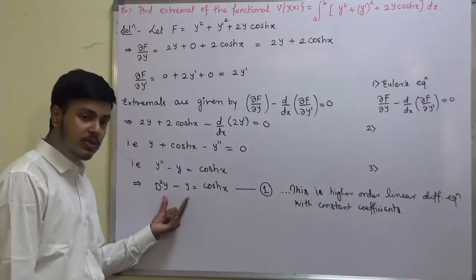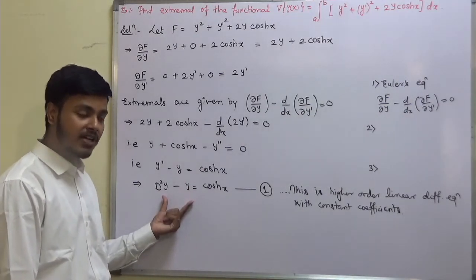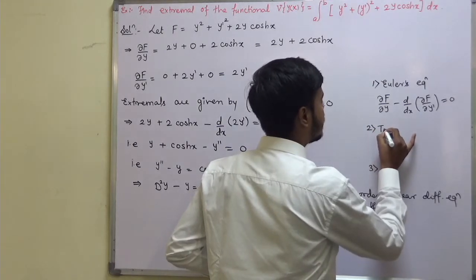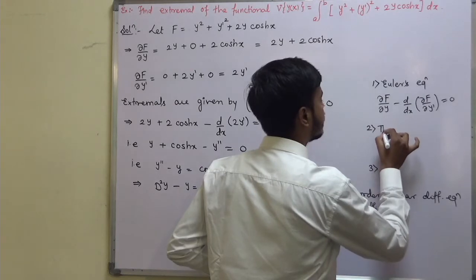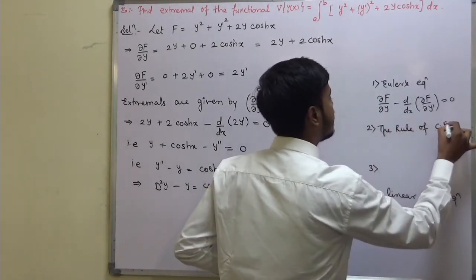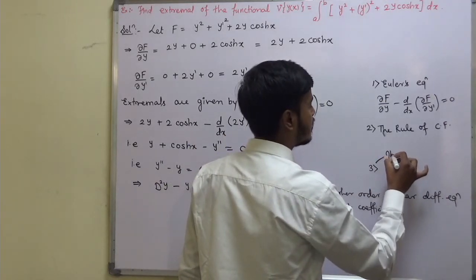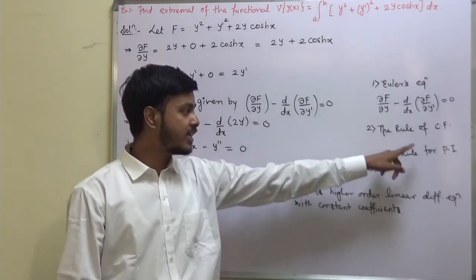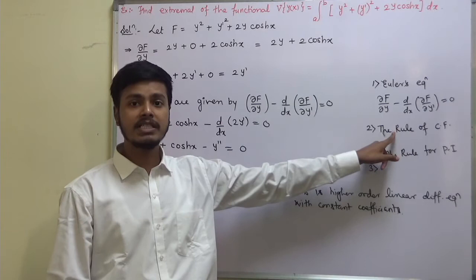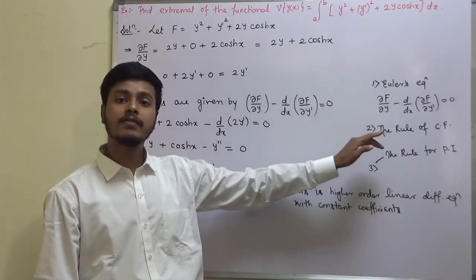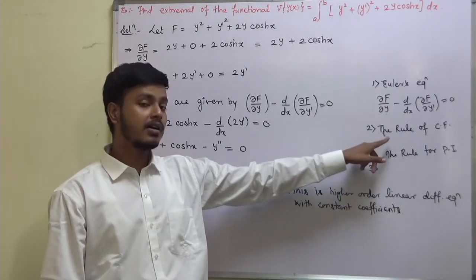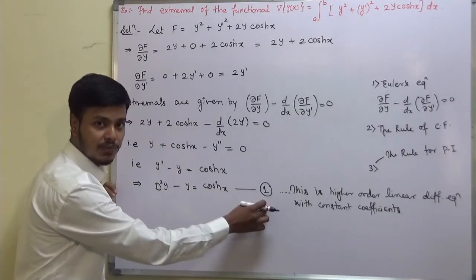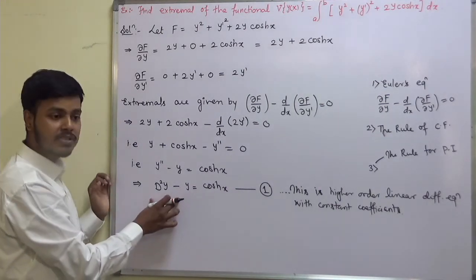To get the solution of such equations, one needs to find the complementary function and the particular integral. The rules for finding the complementary function and particular integral are linked in the description. The solution of equation 1 will be the required extremal.